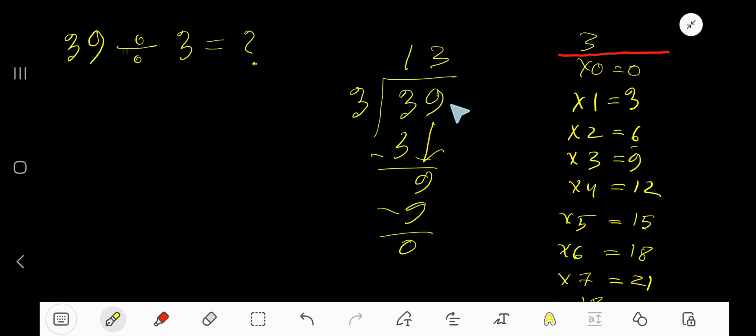As our remainder is 0 and there is no digit in the dividend, we are done. So our answer is 13, our quotient is 13.